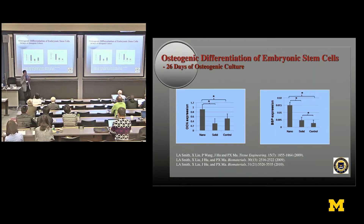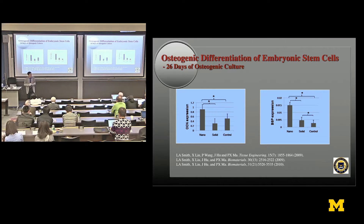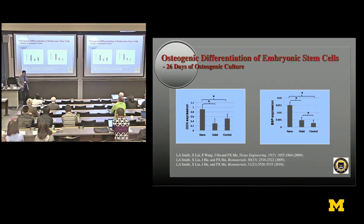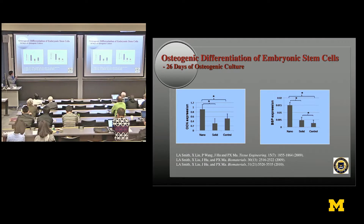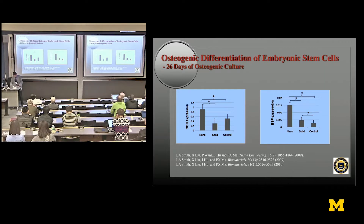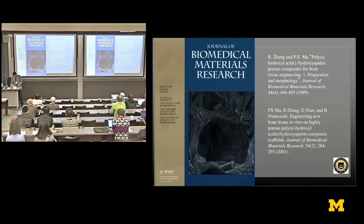We started thinking — since nanofibers can increase osteoblastic differentiation marker gene expression, maybe we can put these materials with stem cells and turn those stem cells toward bone rather than other directions. Graduate student Laura Smith got excited about using materials to direct tissue formation. After a few years she figured out how to use these nanofiber materials to turn stem cells, even embryonic stem cells, into osteoblasts. She published several papers on this and eventually became a faculty member at the University of Texas Houston Medical Center.